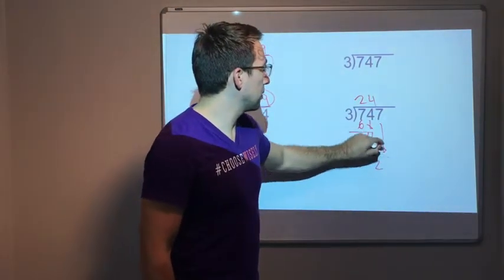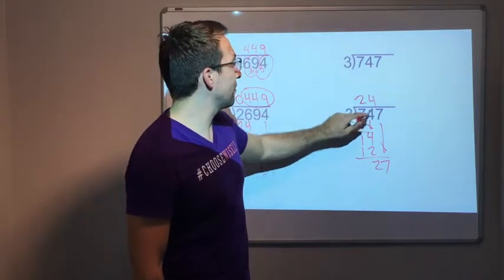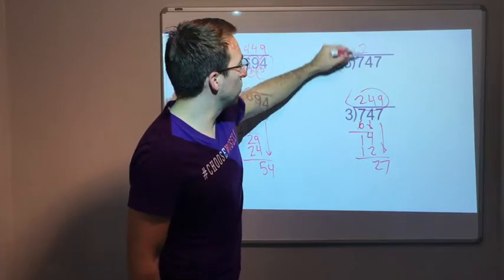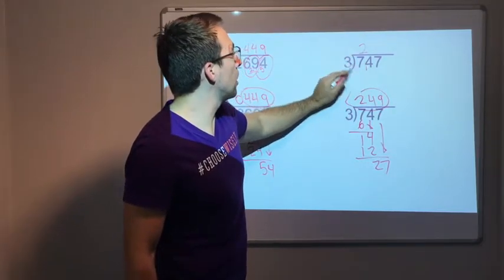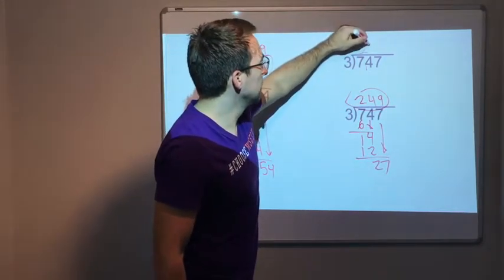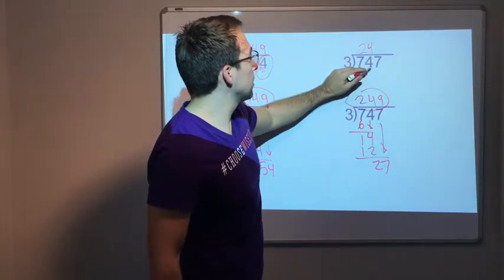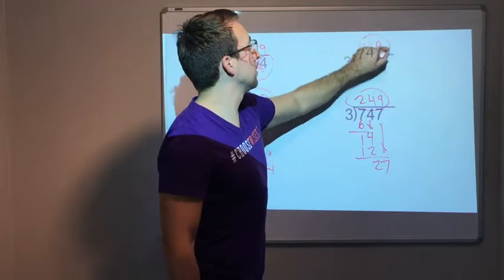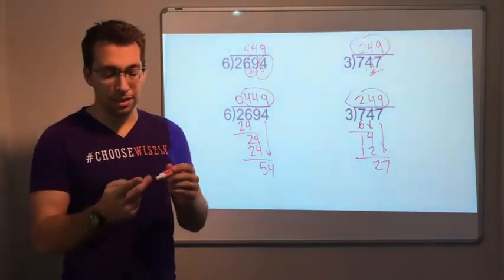2, bring down our 7. 27 divided by 3 is 9. 249. So it'll be 2, we have a remainder of 1. 3 goes into 14 four times, remainder of 2, and then 27 is 9.